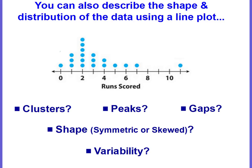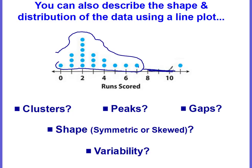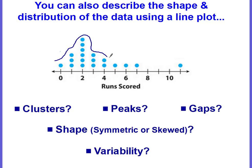We can also describe the shape and distribution of the data using the dot plot. Talk about clusters — data that are grouped close together. We do have a cluster from zero to seven. Are there any gaps? There's a gap from basically eight to ten because there is no data, there are no dots. Do we have any peaks? A peak is your mode. There's a peak at three because it's the tallest column of dots. Is the shape symmetric or is it skewed? Draw your outline around the data — the tail is going to the right, so it's skewed right. Most of the data is down on the left side.